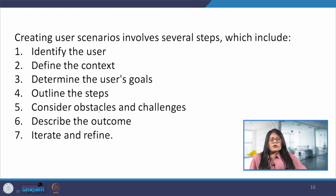Now next is outline the steps. Here we describe the specific steps the user will take to achieve their goals. This can include navigating menus or entering data or also selecting some options. Next step is to consider obstacles and challenges. We have to identify any obstacles or challenges that the user may encounter while he is interacting with our product, any kind of error or any technical issue. We have to take care of that. Sixth is to describe the outcome. Specifying the outcome or the result of the interaction. What is the user achieving from this interaction?